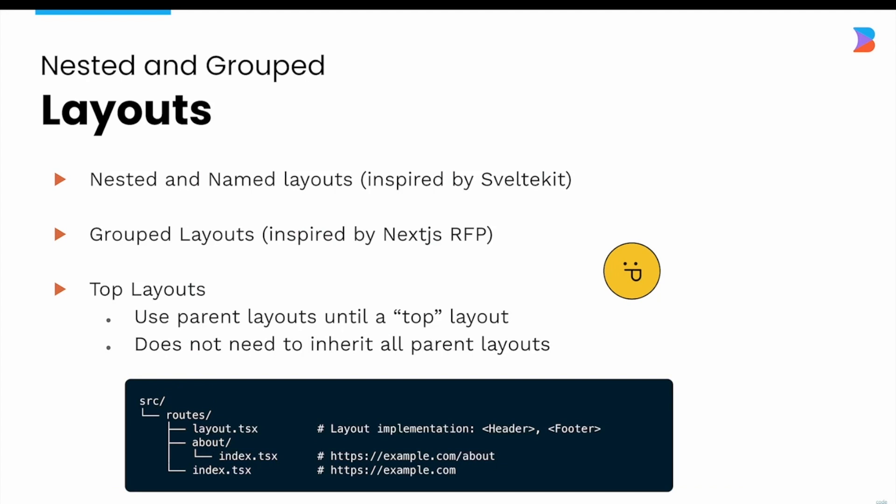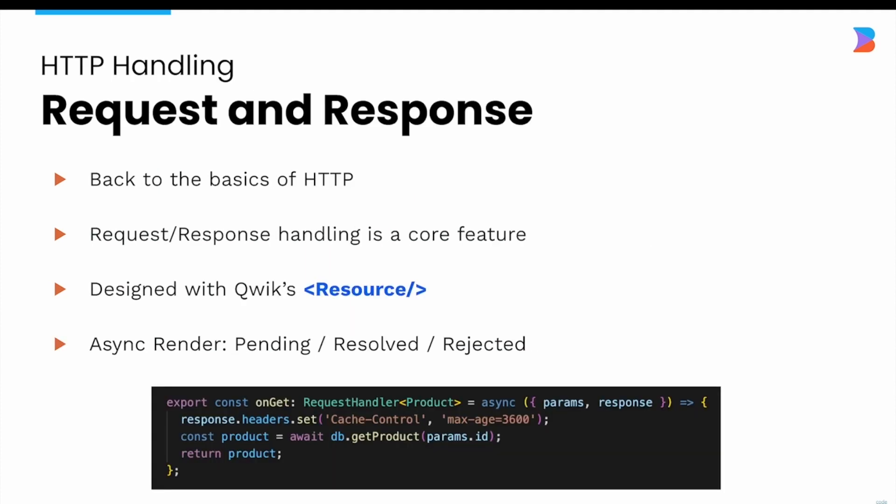Another common feature is nested layouts — the ability to wrap page content with layouts found in parent directories. Quick City's nested and named layouts are inspired by Svelte Kit, and its group layouts are inspired by Next.js's latest proposal. It also provides a top-level layout, which is a way to not inherit parent layouts but instead stop at a certain level.